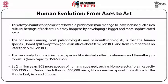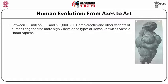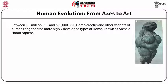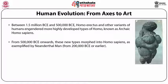Newer species like Homo habilis and Homo rudolfensis emerged around 2 million years ago BCE, followed by Homo erectus, which spread from Africa to the Middle East, Asia, and Europe. Between 1.5 million BCE and 500,000 BCE, Homo erectus and other human variants engendered Archaic Homo sapiens. It was a group of artists from one of these Archaic Homo species who created the Bhimbetka petroglyphs and cups in the Auditorium Cave at Bhimbetka in India and at Daraki-Chattan. These cups are among the oldest art on earth.